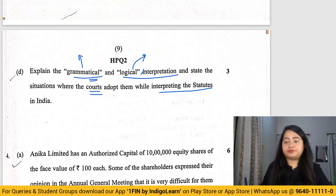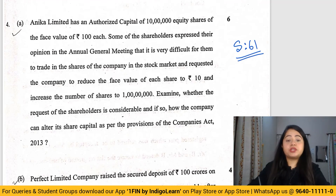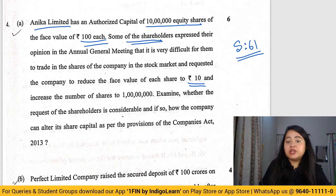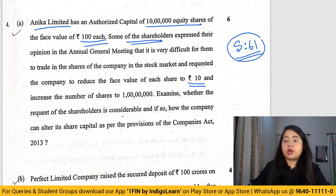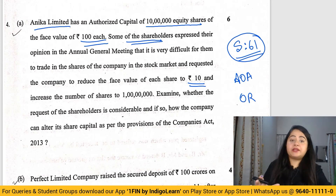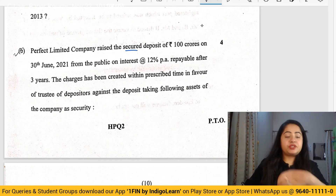The next question is from Share Capital and Debentures, Section 61, on alteration of share capital. Anika Limited has authorized capital of 10 lakh equity shares of 100 rupees each. Some shareholders want to reduce the share price from 100 rupees to 10 rupees to make trading easier. Under Section 61, this is permissible — subdividing shares into a larger number of shares of smaller denomination. It must be authorized by the articles of association, and an ordinary resolution must be passed.